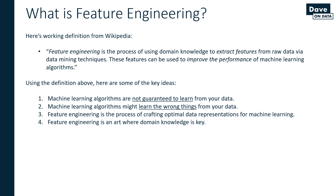If you're using machine learning to help you analyze your business data, domain knowledge is going to be key. Extracting features that actually make sense for your business and presenting them in such a way that the machine learning algorithm can pick up on those patterns requires that you actually know what's going on in the business. At the very least, it requires you to know what the data is — for example, if you're pulling data from a data warehouse, you need to understand what the database columns actually mean in order to use them effectively.